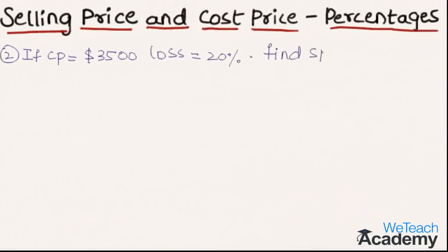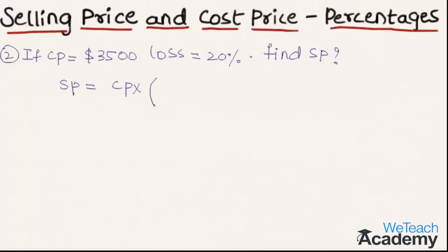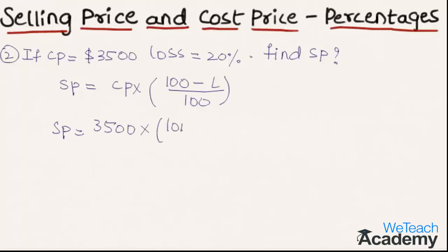In another example, the cost price is $3,500 and the loss is 20%. We have to find the selling price. We know the formula is: Selling Price = Cost Price × (100 − Loss%) ÷ 100. Substituting: Selling Price = 3500 × (100 − 20) ÷ 100.